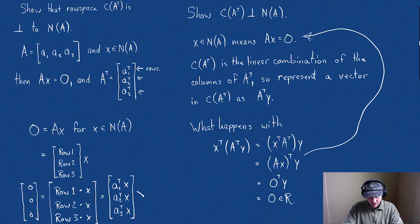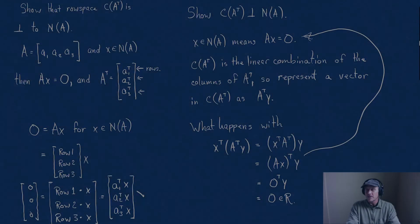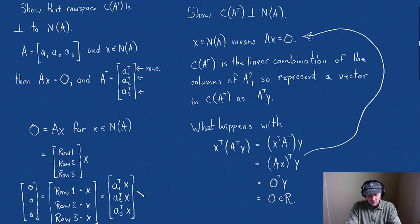So, we have shown, in general now, that the row space is perpendicular to the null space of A. You know what we're going to do is, we'll stop here, and in the next video, we're going to go back to our previous example and work with it. I hope that helps. Thanks for watching.